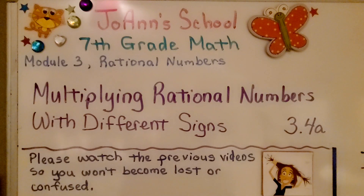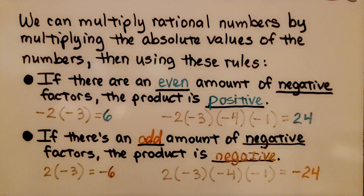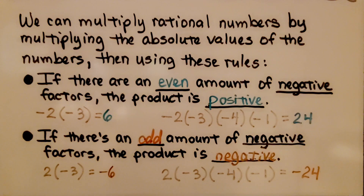We're at 3.4a, multiplying rational numbers with different signs. We can multiply rational numbers by multiplying the absolute values of the numbers, then using these rules: if there are an even amount of negative factors, the product is positive.